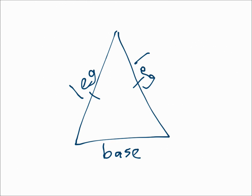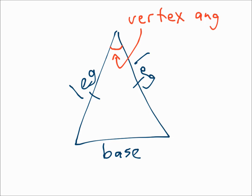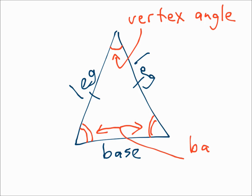An isosceles triangle has two congruent sides. Those sides are called the legs. The third side is called the base. The angle between the two legs is called the vertex angle, and the two angles at the base are called the base angles.